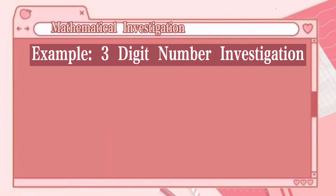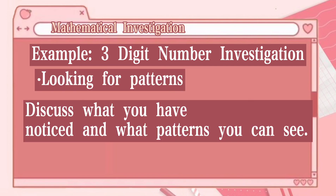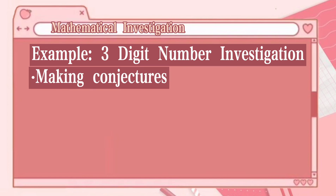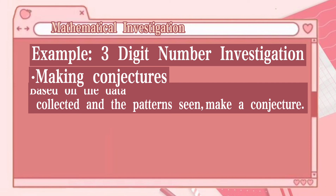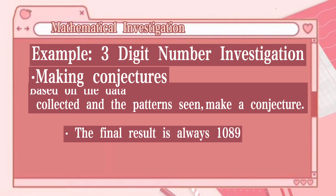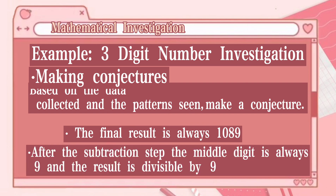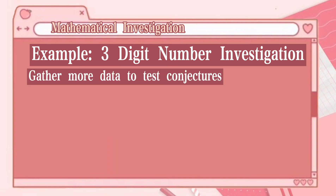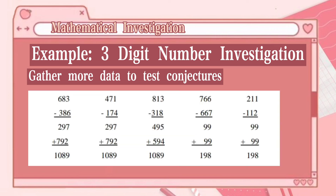Next, look for patterns — discuss what we have noticed and what patterns we can see. Then make conjectures based on the data collected. The conjecture is: the final result is always 1089. After the subtraction step, the middle digit is always 9 and the result is divisible by 9. Let's gather more data to test this conjecture. For example, 683 − 386 = 297; reversed 297 is 792, and 297 + 792 = 1089, confirming the pattern.